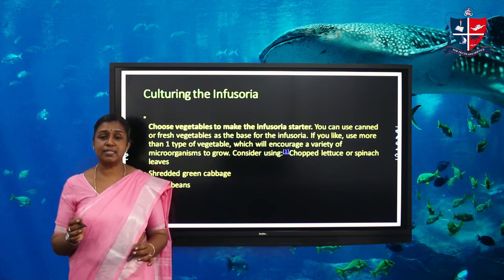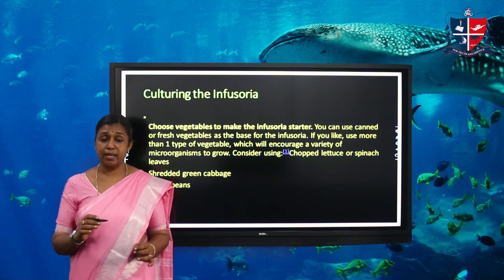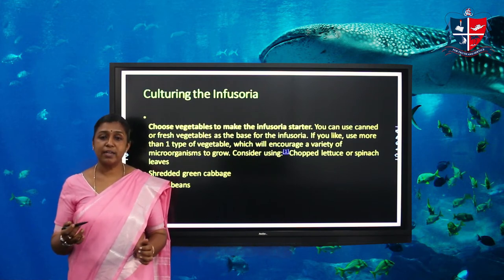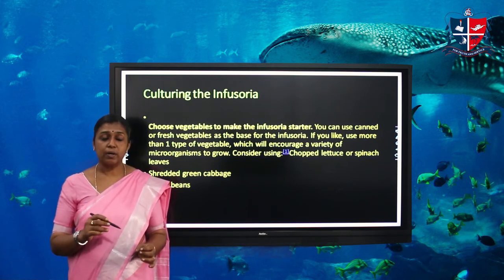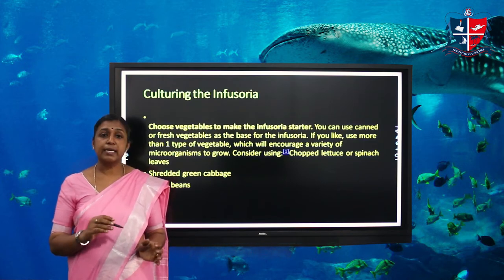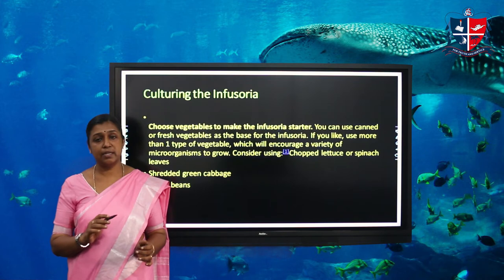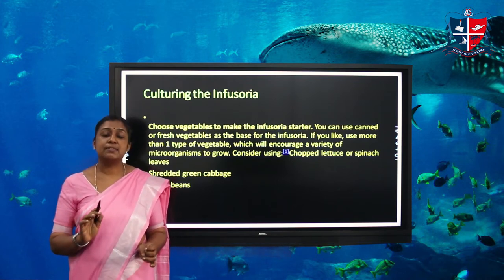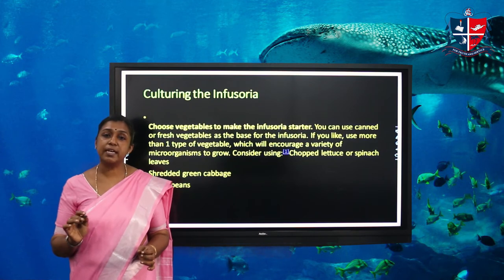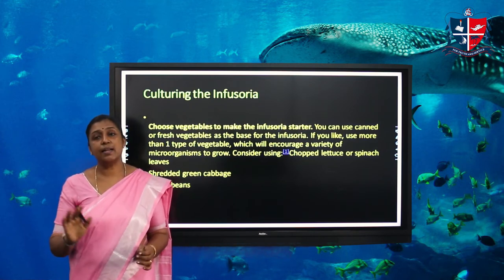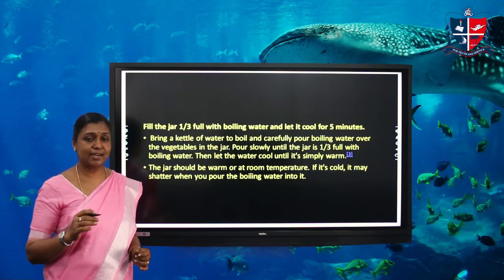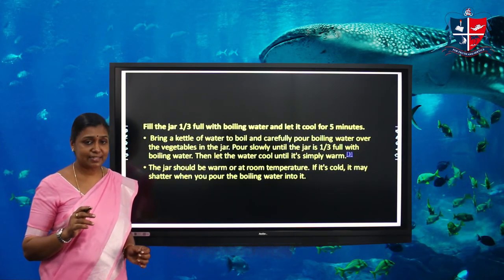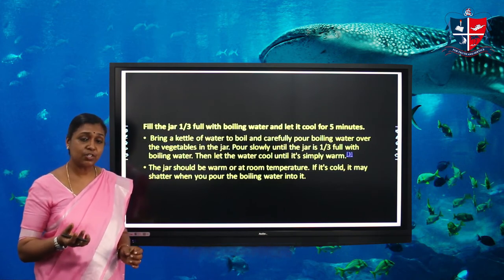Spinach leaf gives very good results. When we use spinach leaf or banana leaf it will produce more infusoria. Fill the bottle with chopped banana leaf or chopped spinach leaf. Keep this bottle on the windowsill, as sunlight is very essential for producing infusoria. Keep this bottle in a sunny place — that is very important. After one to three days, the water changes to a milky color.